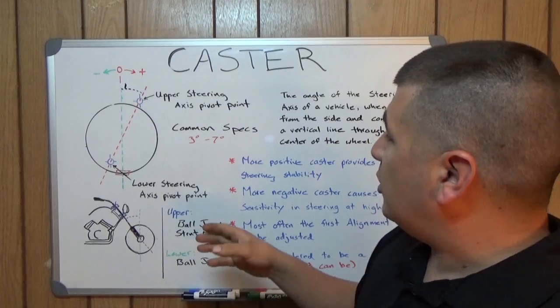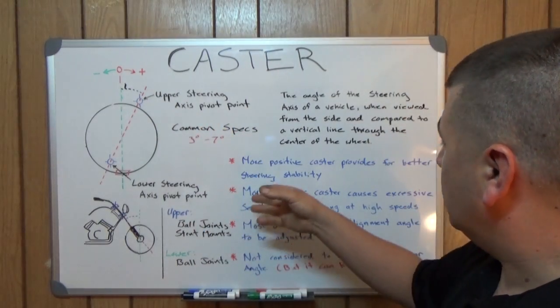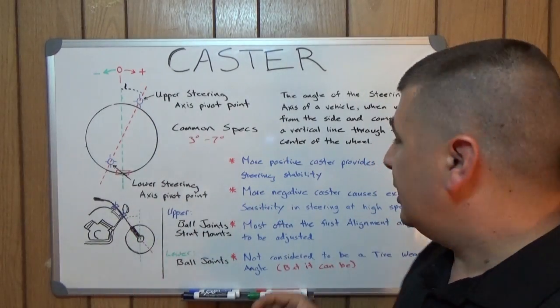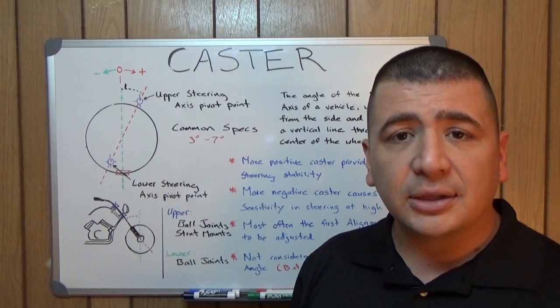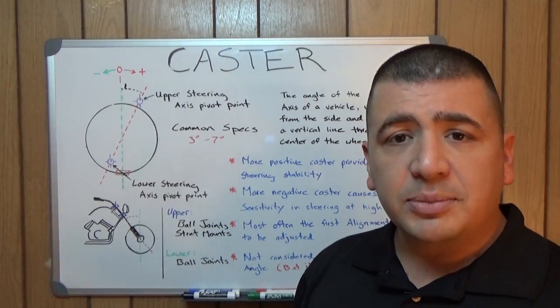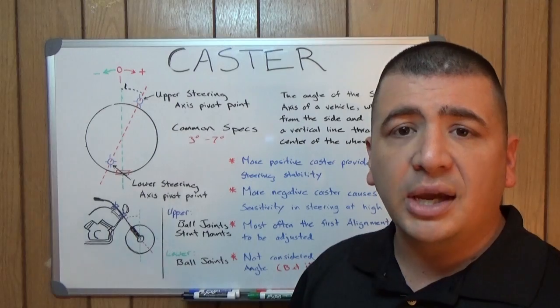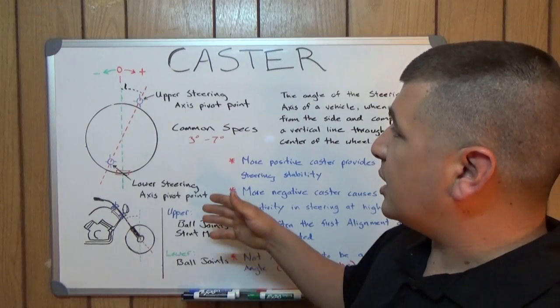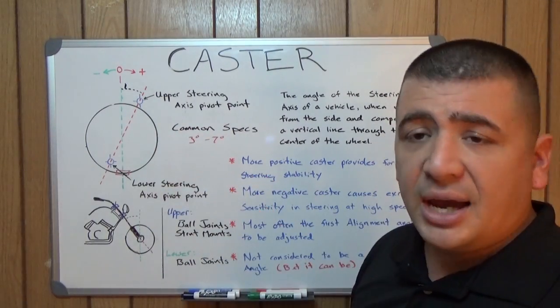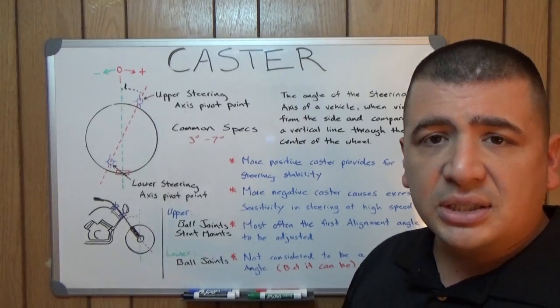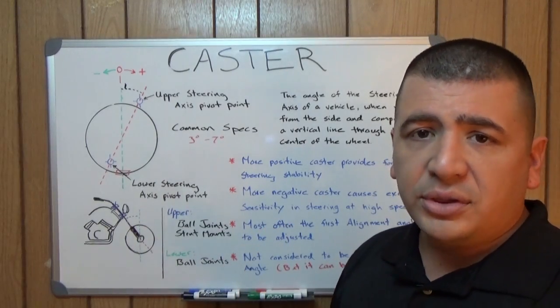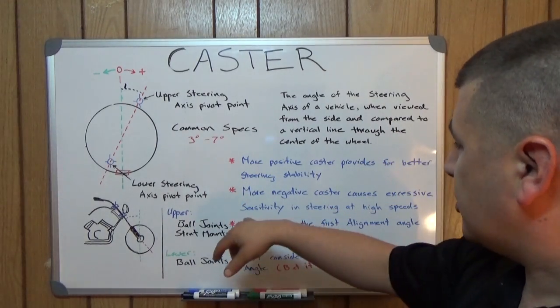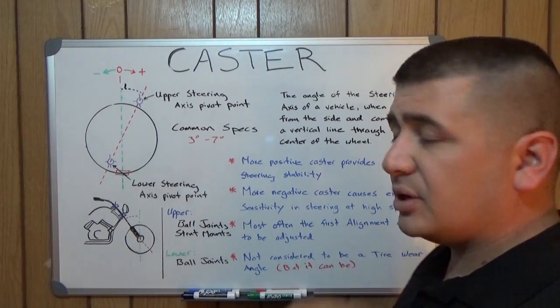And it's just the same with caster here, only on automotive applications. More positive caster will give you better steering stability because it will want to follow just in a straight line. The more negative your caster goes, the more likely your vehicle is going to follow all the little dips in the road and the ruts in the road created by tires driving over it hundreds of thousands of times.